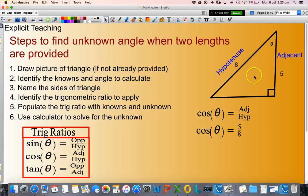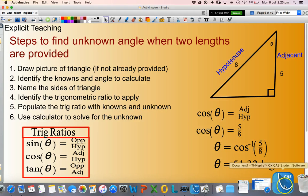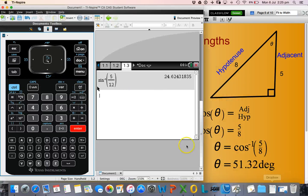Adjacent is 5, hypotenuse is 8. Then I'll use my calculator to calculate the unknown angle. So you'll see here, theta equals the inverse cosine of 5 divided by 8. I'll show you quickly how I do that in my calculator.